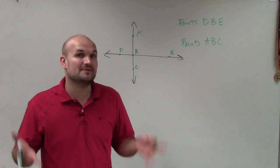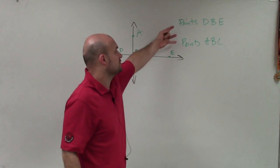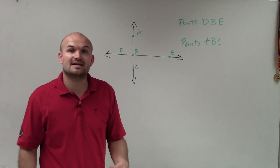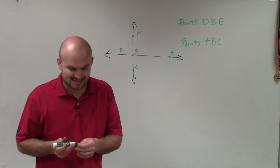So again, for them to be collinear, they have to lie on the same line. Those are two examples of points that are all collinear. Thanks.